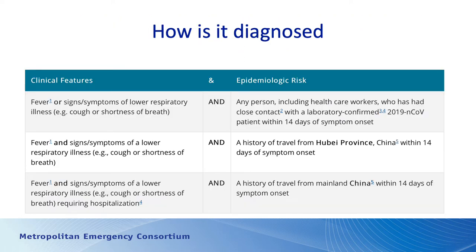Currently we make the diagnosis based on clinical features and epidemiologic risk: does a patient have fever or symptoms of a lower respiratory infection such as cough or dyspnea, and have contact with a confirmed case? Or have they developed symptoms with a history of recent travel to the endemic area of China within the previous 14 days? This may change — patients who have been in South Korea developing symptoms will likely eventually be given the same consideration. At this point, diagnosis is based on travel history and symptoms.